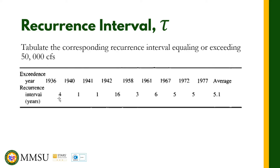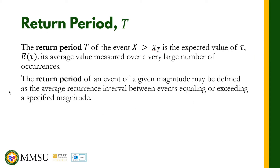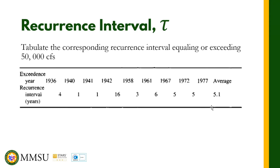The recurrence intervals between those years are: 4, 1, 1, 16, 3, 6, 5, and 5. To compute the return period, remember that the return period is the expected value — basically the average — of the recurrence interval. So the return period T is equal to 5.1 years, which is the average of the recurrence intervals.